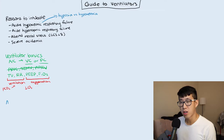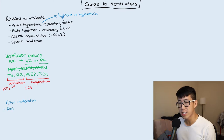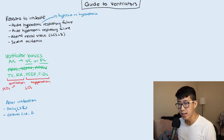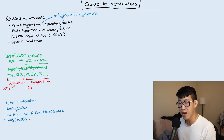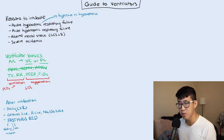After intubation, there are several things to do. We get daily chest X-rays and discuss placing lines such as a central line, A-line, and NG or OG tube. Then there's a bundle called Fast Hugs BID. F is for feeding, A is for analgesia and sedation, T is for thromboprophylaxis, and H is for head of bed elevated greater than 30 degrees.